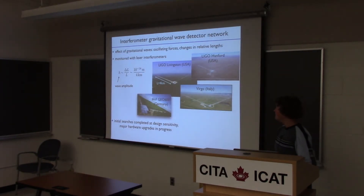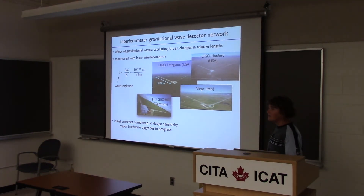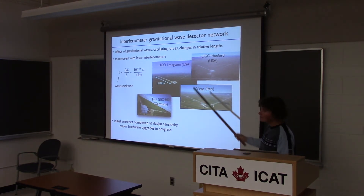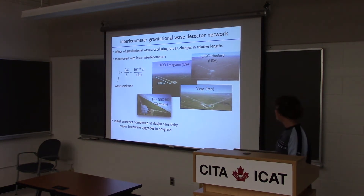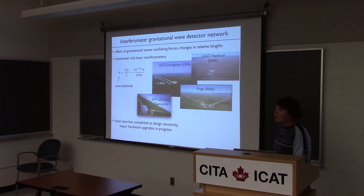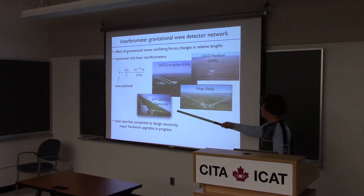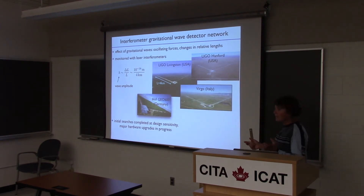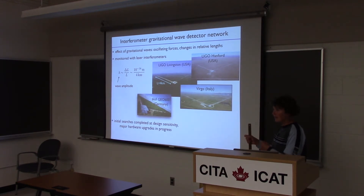Just to remind you about the existing network of gravitational wave detectors. There are four different sites: LIGO in Hanford and Livingston in the USA, Virgo in Italy, and GEO 600 in Germany, which is a smaller detector. Those have four kilometer long arm lengths and are essentially Michelson type interferometers that try to monitor relative changes in the arms that would happen if a gravitational wave passed.